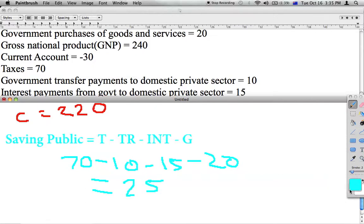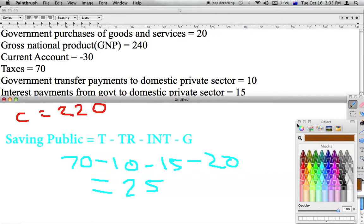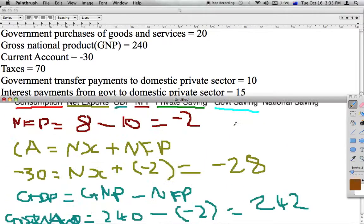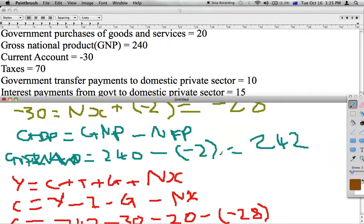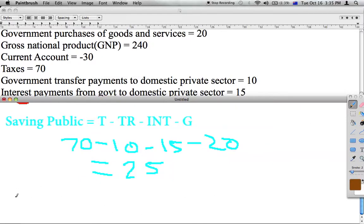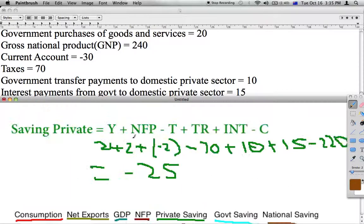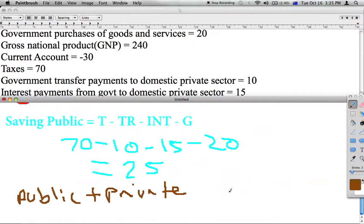So finally, the last variable we have to figure out is our national savings. That's quite simple. It is simply public savings plus our private savings, which equals minus 25 plus 25. Because our private savings is minus 25 plus 25, which will equal 0. So that's our national savings, equals 0.